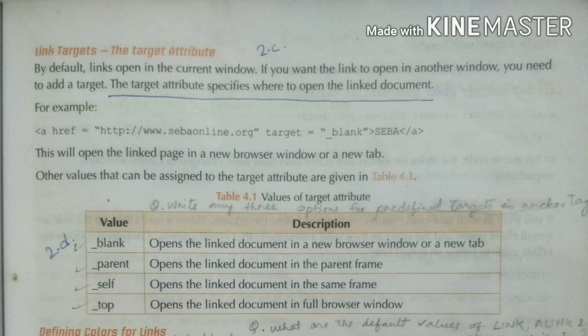You have to describe where it will open using the target attribute. This target attribute has four values: blank, parent, self, and top. These are the four values of the target attribute. You can read the descriptions to understand what will happen when you use each value.